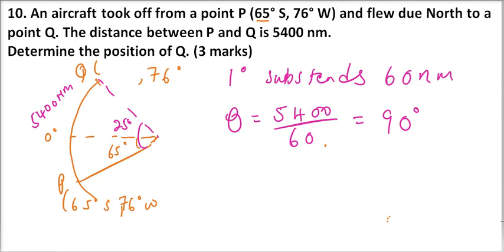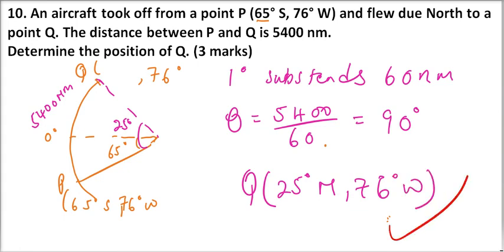So that when you add 65... and actually we are getting the length of the arc from P to Q, only that this time it is around the longitude, that is the imaginary line of the earth's surface. And therefore our Q is 25 degrees north, and the longitude remains 76 degrees to the west. So that's how you do that and you get yourself three marks.